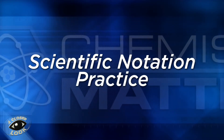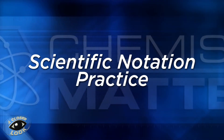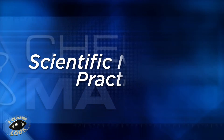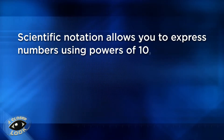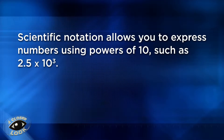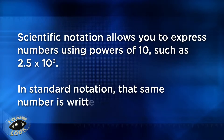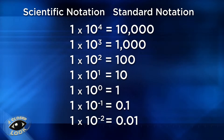In this closer look, you'll be doing some scientific notation practice. Scientific notation allows you to express numbers using powers of 10, such as 2.5 times 10 to the third. In standard notation, that same number is written as 2,500. Here's a chart that shows how scientific notation and standard notation compare.